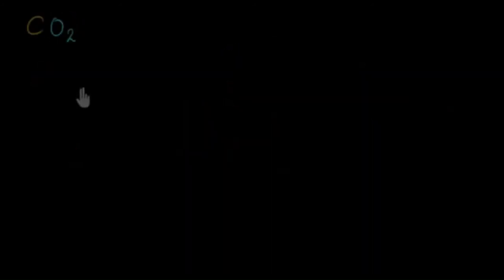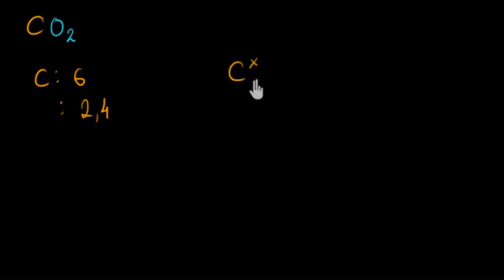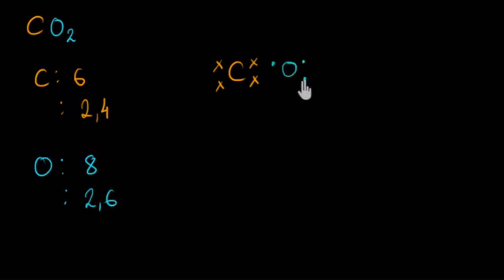Now let's look at one more example: a molecule of carbon dioxide, where one atom of carbon shares electrons with two atoms of oxygen. There are only covalent bonds in this molecule and all atoms have their octet complete. Carbon has atomic number six, so its electronic configuration is 2,4 — four electrons in its outer shell. Oxygen has eight electrons with configuration 2,6 — six electrons in its outer shell. Let me draw carbon with four electrons and each oxygen with six electrons.